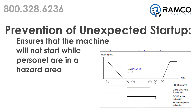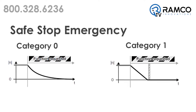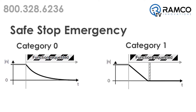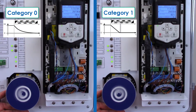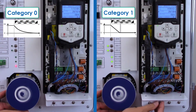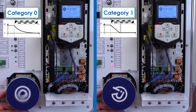Prevention of unexpected start-up ensures that the machine will not start while personnel are in a hazard area. This is another layer of protection that is used with the safe torque off function. The safe stop emergency function can be set up as a category zero with immediate safe torque off, or as a category one with either time or ramp monitoring. The safe stop one function is always a category one with either time or ramp monitoring.